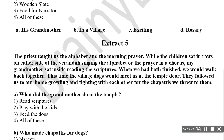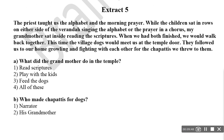Let's move on to extract five. The priest taught us the alphabet and the morning prayer while the children sat in rows on either side of the veranda, singing the alphabet or the prayer in a chorus. My grandmother sat inside reading the scriptures. When we had both finished, we would walk back together. This time the village dogs would meet us at the temple door, they followed us to our home, growling and fighting with each other for the chapatis we threw to them. What did the grandmother do in the temple? She would read scriptures.